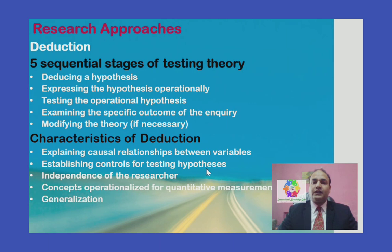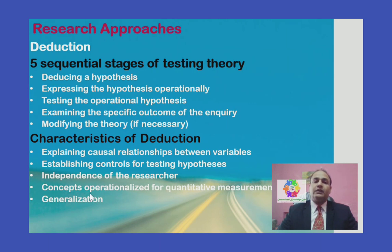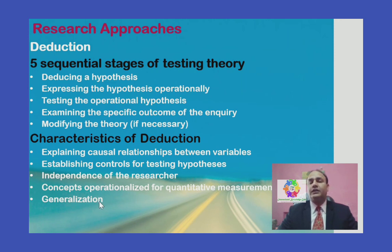Number three: independence of the researcher — the researchers remain neutral and unbiased. Number four: concepts are operationalized for quantitative measurement — we quantify our data, use measuring methods, and try to develop it. Number five: generalization of results — we generalize the results to see how broadly they apply and whether they are correct.